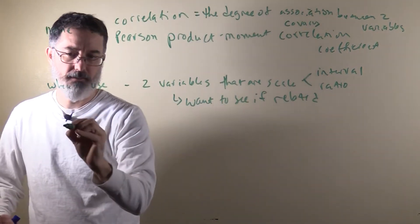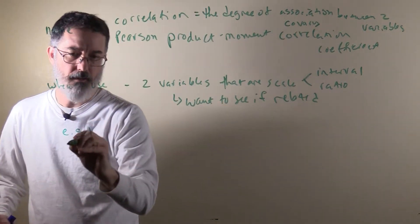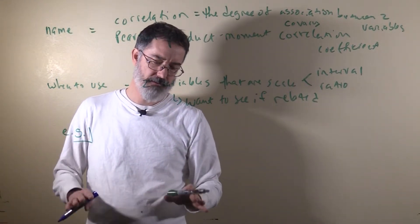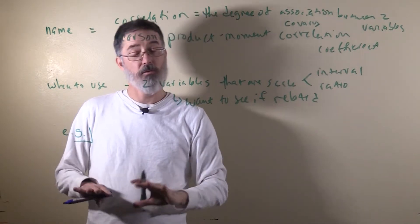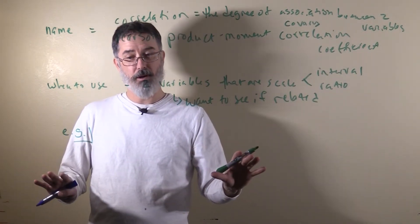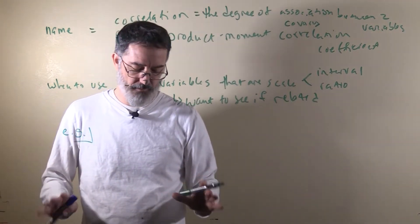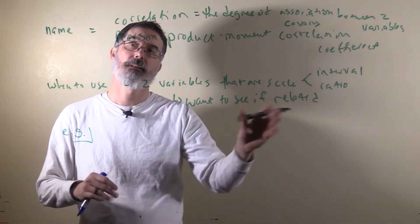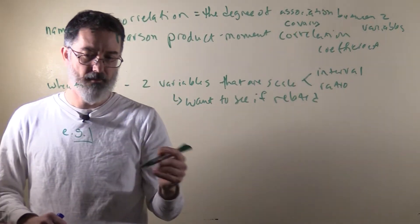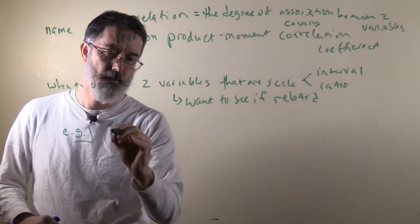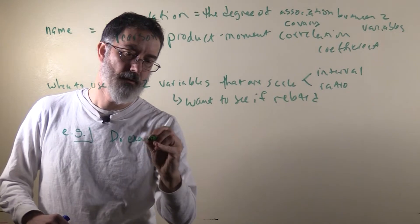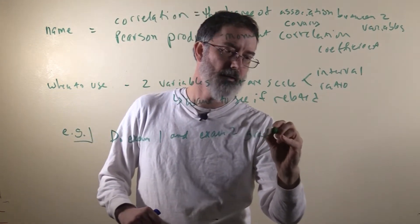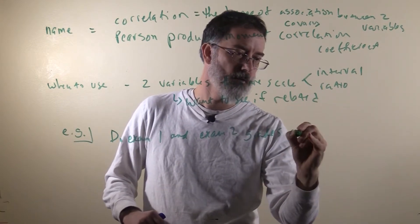An example that I have done in the past is, I wanted to see if my statistics students exam 1 grades correlated with their exam 2 grades. Each student had an exam 1 grade and an exam 2 grade. I wanted to see if the students who did better on exam 1 did better on exam 2. So, do exam 1 and exam 2 grades correlate?